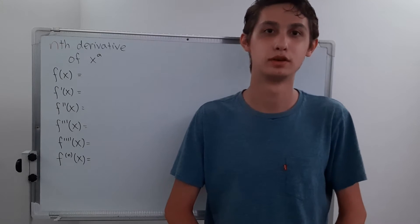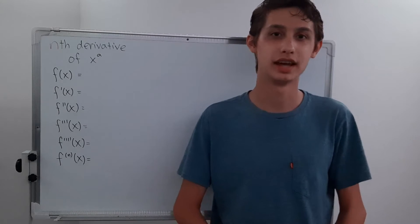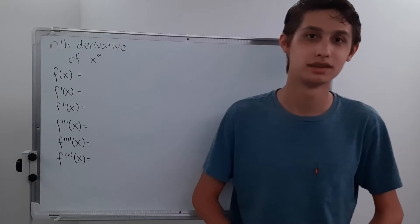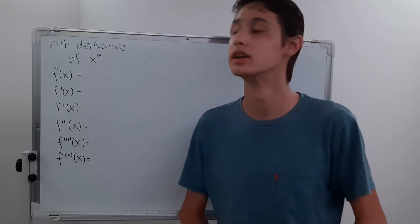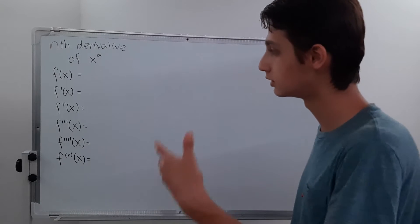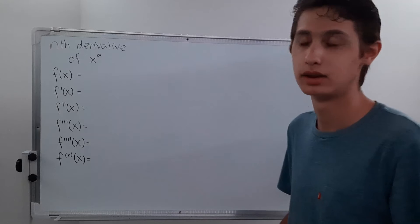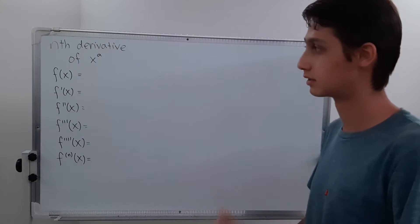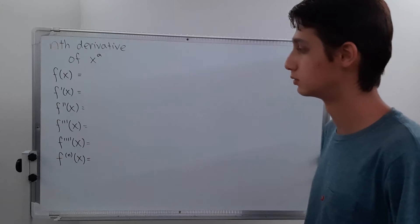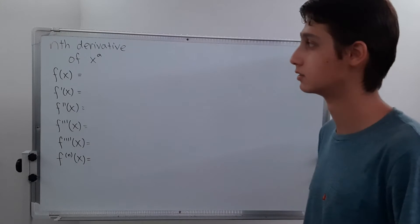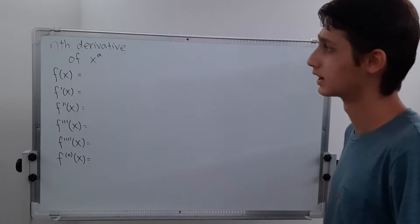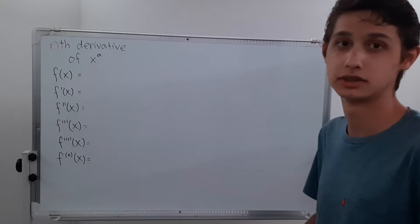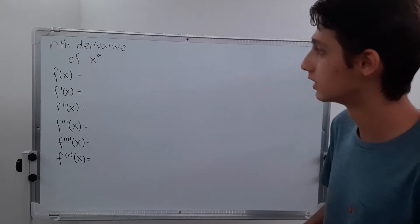Hey everybody, today we are going to be finding a formula for the nth derivative of x to the a power, a being some number, some exponent. We're going to do this by looking at a pattern — finding the first, second, third, and fourth derivatives of our function, and using that to find a formula for the nth derivative. It connects a lot of other ideas found elsewhere in math, and I think it's actually really cool. So let's do it.